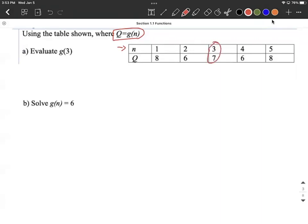So in this case we can say, well, 3 gets associated with 7 as being an output. So we'd say g of 3 equals 7.